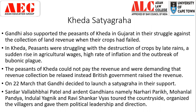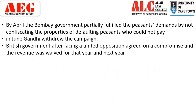On 22nd March, Gandhi decided to launch a Satyagraha in their support. Sardar Vallabhbhai Patel, a very promising lawyer at the time, left his job and joined this movement. Ardent Gandhians namely Narhari Parekh, Mohanlal Pandya, Indulal Yagnik and Ravi Shankar Vyas toured the entire countryside of Kheda, organised the villages and gave them political leadership and direction under Gandhi's guidance. By April, the Bombay government partially fulfilled the peasants' demand by not confiscating the properties of defaulting peasants who could not pay. In June, Gandhi withdrew the campaign — it was decided that if you could not pay the revenue, your land would not be taken.